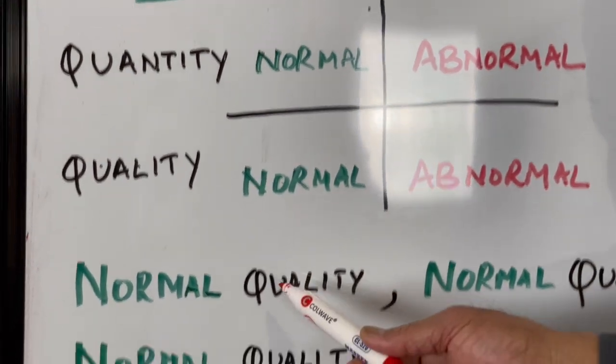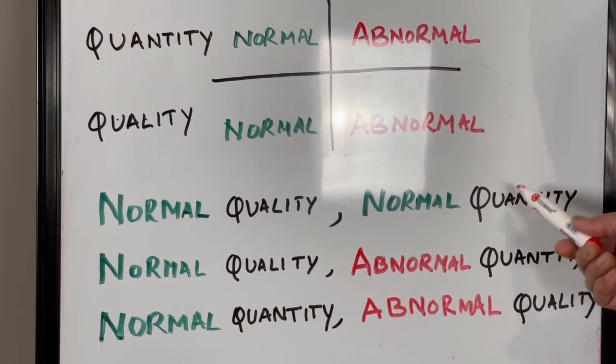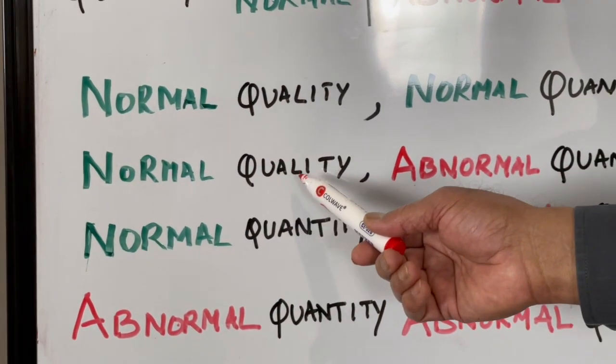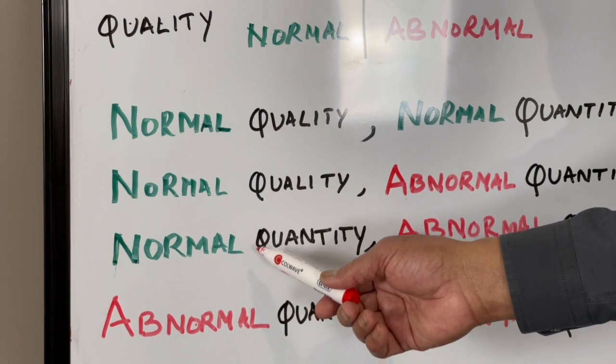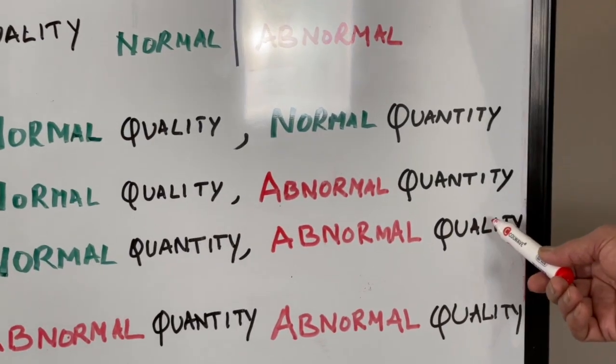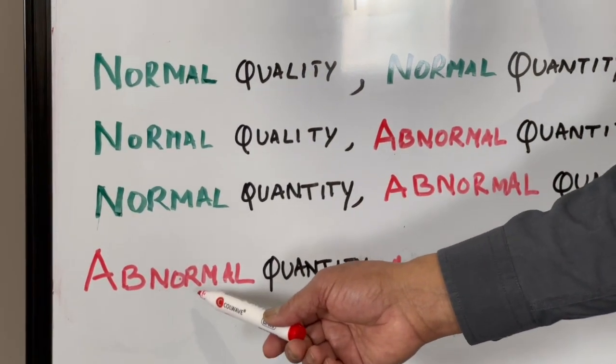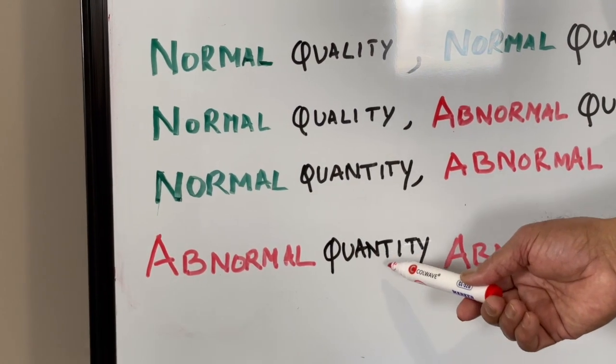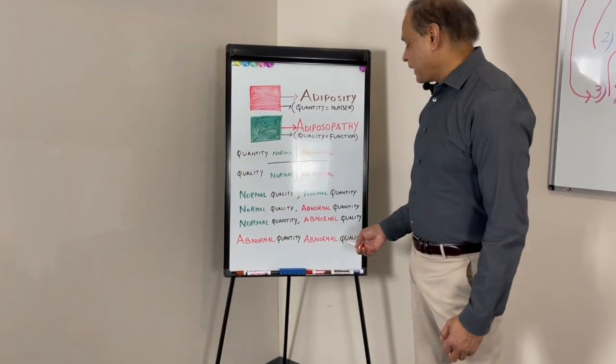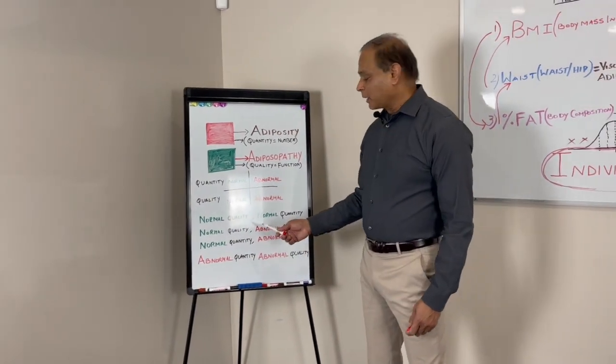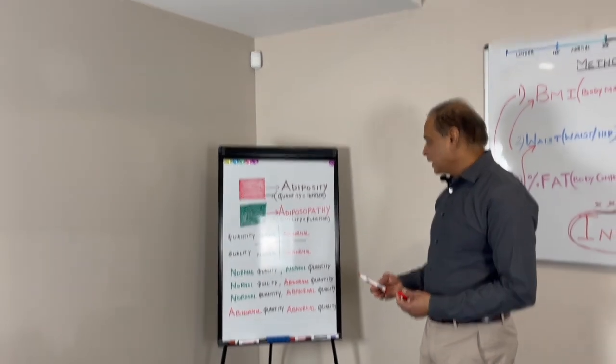You can have normal quality fat with normal quantity fat—someone falling into normal ranges. Or normal quality fat with abnormal quantity. Or normal quantity fat with abnormal quality—many thin people get diabetic or other metabolic issues. Or the last: abnormal quantity with abnormal quality. All the medical terms and diseases we discuss are various combinations each of us can fall into.